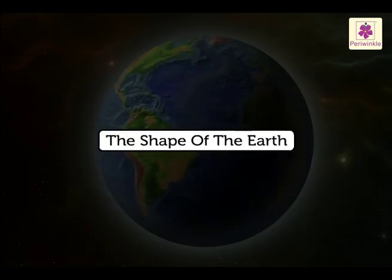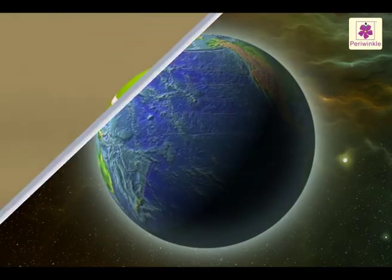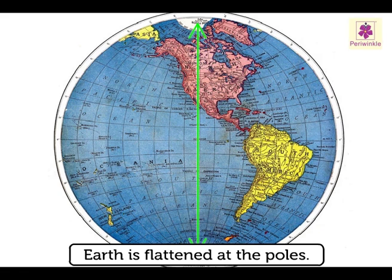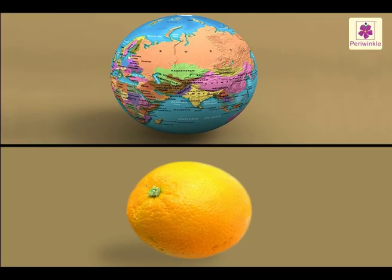The Earth is not exactly round like a ball. It is flattened at the poles. It looks more like an orange.